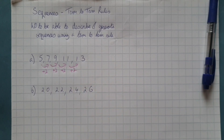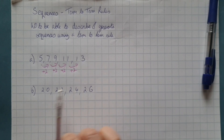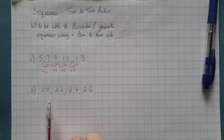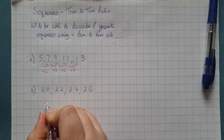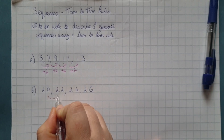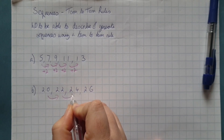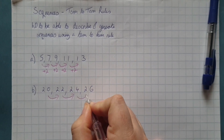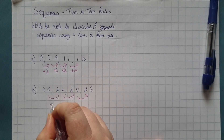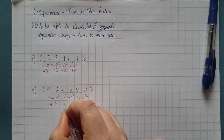So part of the term-to-term rule is add 2, but we are missing a key feature. If we look at sequence B, we'll see why. If you look at this sequence, we are also going up and we are also adding 2.